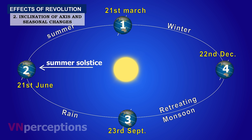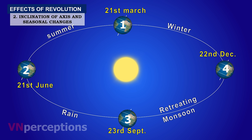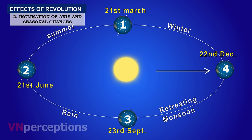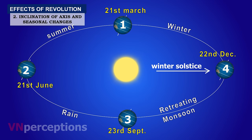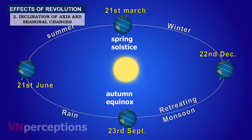As we come to the third position — 23rd September — once again day and night are equal, and India experiences rain. When the earth reaches the third position, the entire earth has equal day and equal night. As we come to the fourth position on 22nd December, the southern hemisphere is facing the sun and the vertical rays fall on the Tropic of Capricorn — the northern hemisphere experiences winter solstice. The first and third positions are referred to as equinox because day and night are equal: the first is spring equinox and the third is autumn equinox.